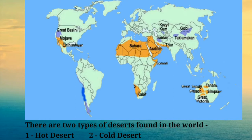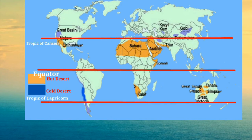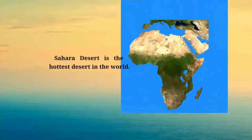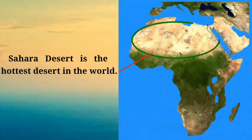There are two types of deserts found in the world: the hot deserts and the cold deserts. The hot deserts are found near the Tropics of Cancer and Capricorn. Sahara Desert is the hottest desert in the world.